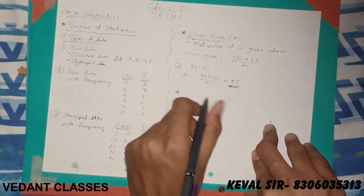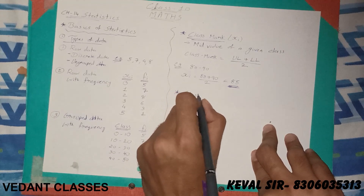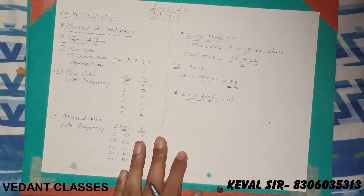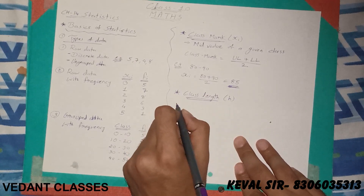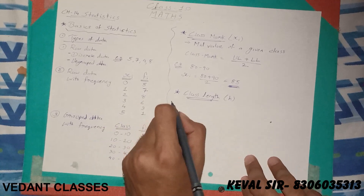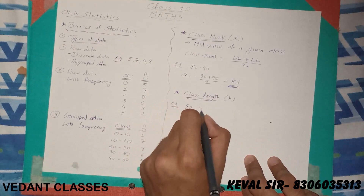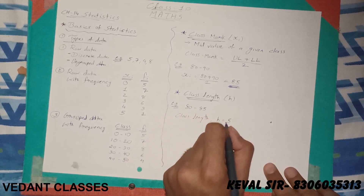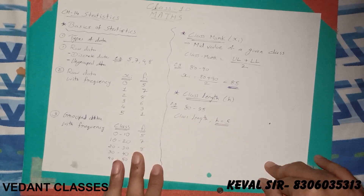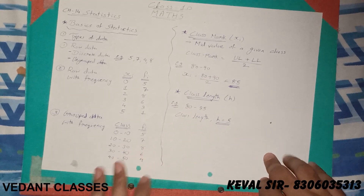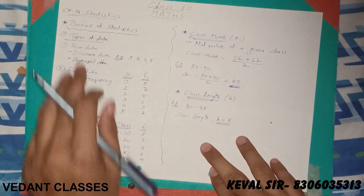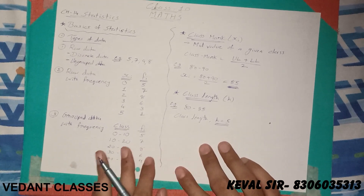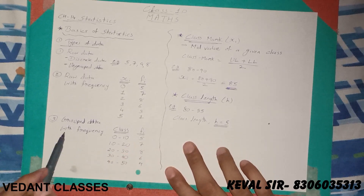Now let us see another important term: class length, denoted by small h according to NCERT. Class length is the difference between the upper limit and the lower limit. For example, if the class is 80 to 85, the class length is 5. Now, in class 9 we already learned how to calculate measures of central tendency for raw data and raw data with frequency. In class 10, we will learn how to calculate mean, median, and mode for grouped data with frequency.